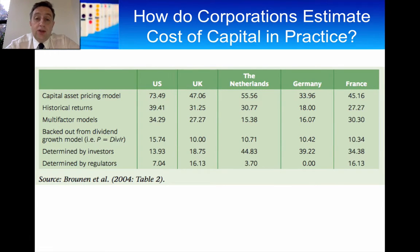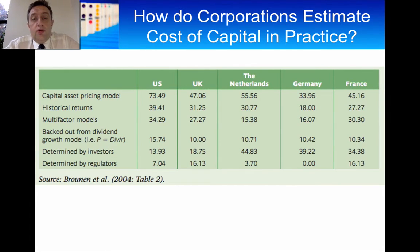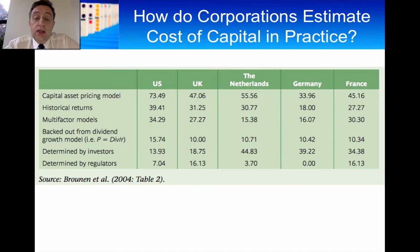You'll find that there's quite a lot of variation across the world. Now, this could be reality — that there is variation — or it could be that there's sampling bias here. Most textbooks in corporate finance come from the US, and in the US you've got a very strong focus on CAPM, on the capital asset pricing model. And you can see that in the US, nearly three quarters of all of the largest companies use CAPM.